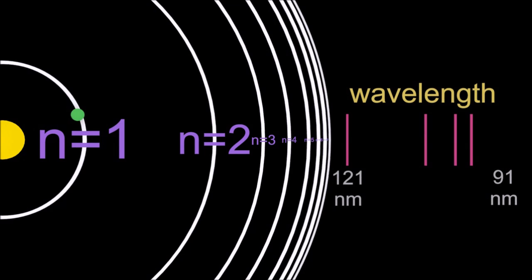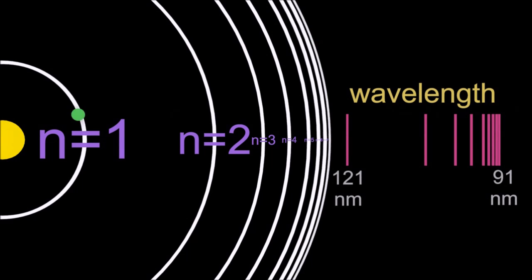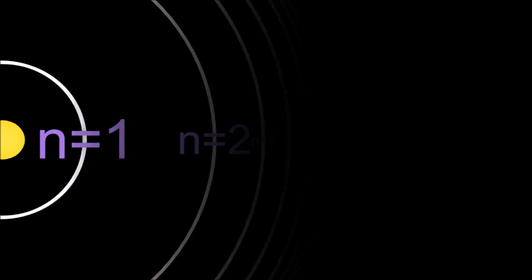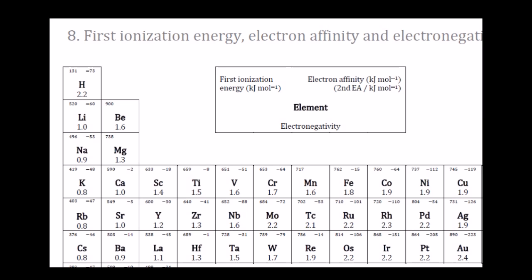Eventually, if you give that hydrogen atom and its associated electron enough energy, it will leave. It will reach n equals infinity, and you've just made an ion. Those lines meet at 91 nanometers, which is the so-called limit of convergence.